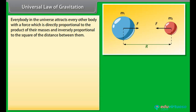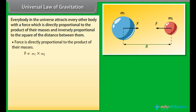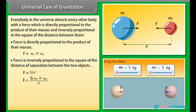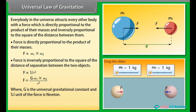Universal law of gravitation: every body in the universe attracts every other body with a force which is directly proportional to the product of their masses and inversely proportional to the square of the distance between them. Force is directly proportional to the product of their masses, and inversely proportional to the square of the distance of separation between the two objects, where G is the universal gravitational constant and the SI unit is Newton.